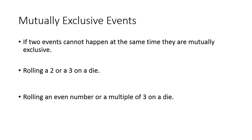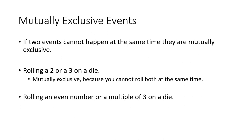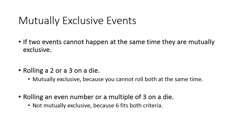Now, mutually exclusive events: that is when two events cannot occur at the same time. For example, rolling a two or a three on a die — you can't get both at the same time, so they are mutually exclusive. But if you want to roll an even number or a multiple of three, that would not be mutually exclusive because the number six fits both criteria. If there are numbers that fit both criteria, those are not mutually exclusive.